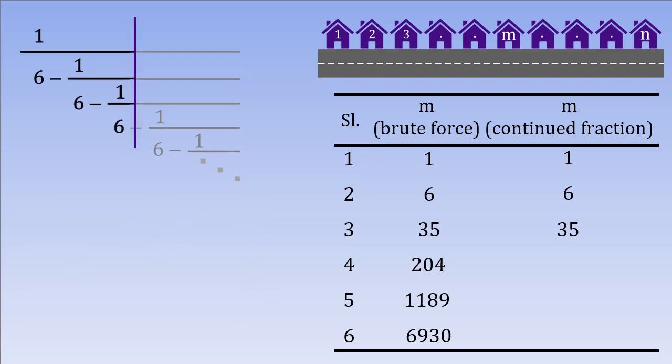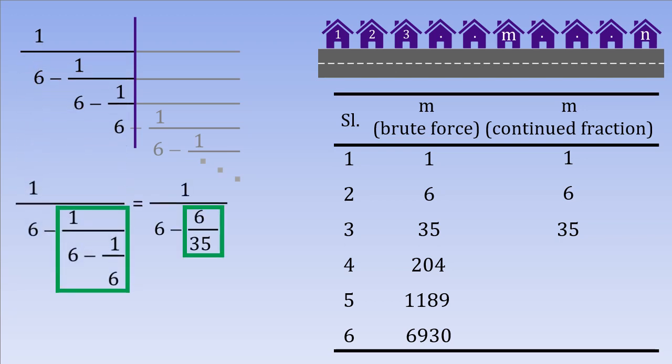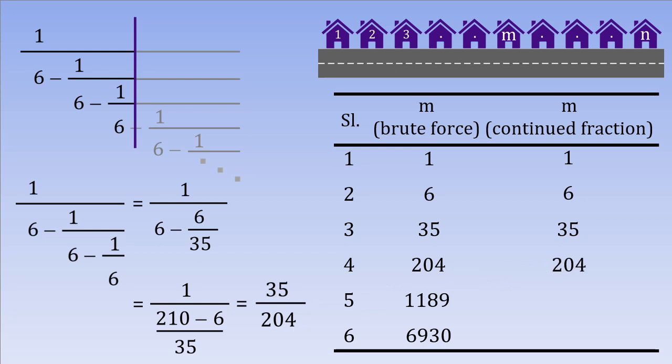Can we take this trick one level higher up? We have already obtained the value of the fraction highlighted in the box in the previous level. We substitute that value here and further simplify to get 35 over 204. This is magic. That's our answer right there.